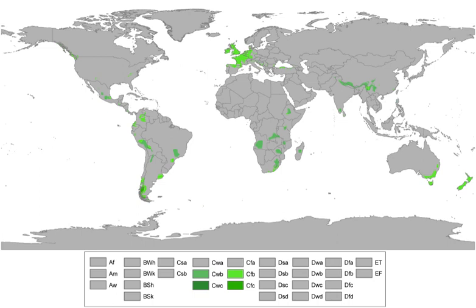CFB climates are predominant in central parts of western Europe, including northern Spain, Belgium, Britain, France, Ireland, and the Netherlands. They are the main climate type in New Zealand and the Australian states of Tasmania, Victoria, and southeastern New South Wales, starting from the Illawarra region. In North America, they are found mainly in Washington State, Oregon, Vancouver Island and neighboring parts of British Columbia, as well as many coastal areas of southwest Alaska. There are pockets of CFB in most South American countries, including many parts of southern Chile, and parts of the provinces of Chubut, Santa Cruz, and Buenos Aires in Argentina.